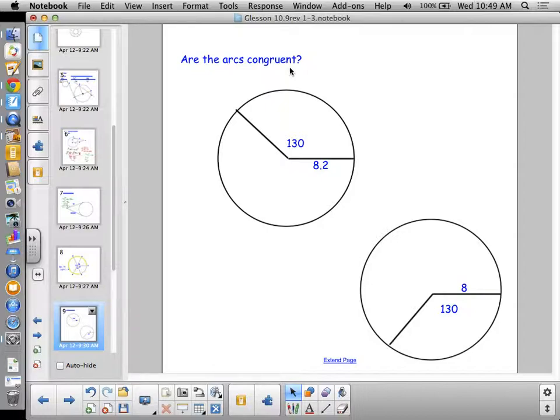Are these two arcs congruent? Are the two arcs that we have, so I should indicate them, are these two arcs congruent? How many say yes? How many say no? How many say they don't have enough information? What is the requirement to have congruent arcs? They have to have the same measure and be in congruent circles. They both have measure 130, don't they? But are they in congruent circles? No. So the arcs themselves are not congruent.